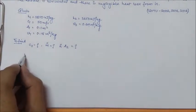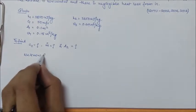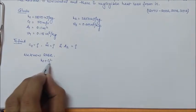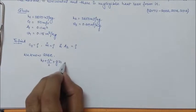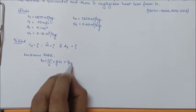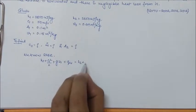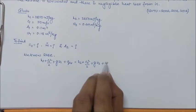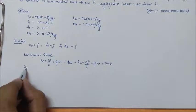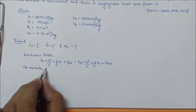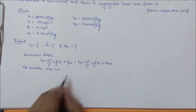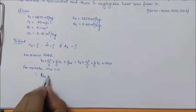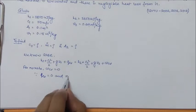So what we have? We know SFEE, that is the steady flow energy equation as H1 plus C1 square by 2 plus GZ1 plus QCV equal to H2 plus C2 square by 2 plus GZ2 plus WCV.